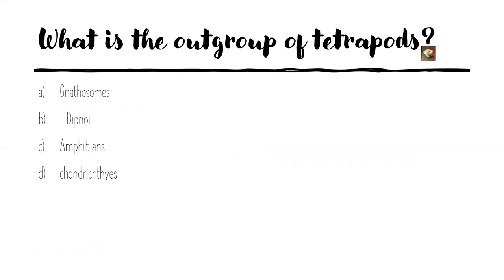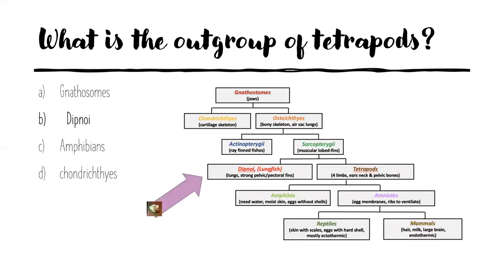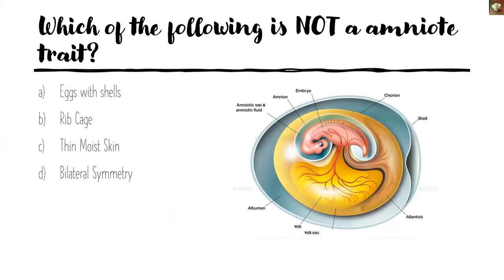Now we have two multiple choice questions. The first question — what is the outgroup of tetrapods? — covers information from Dr. Joseph's lecture 8 video. The answer is Dipnoi, lungfish, which you can see on the Tree of Life as the sister taxon outgroup. For the last question: which of the following is NOT an amniote trait? The answer is thin moist skin, which is actually a trait from the amphibia clade, not the amniote clade.